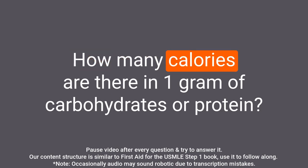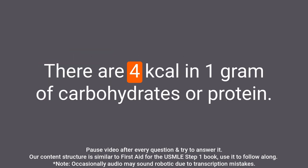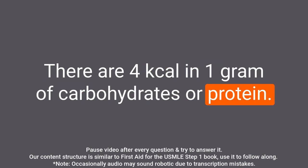Question: How many calories are there in one gram of carbohydrates or protein? Answer: There are four kcal in one gram of carbohydrates or protein.